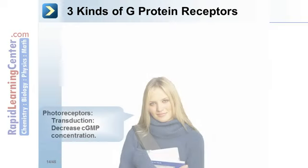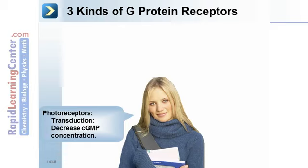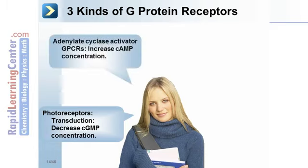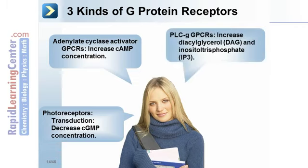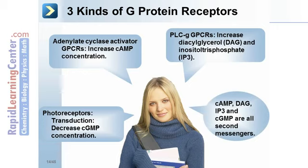There are three kinds of G-protein receptors. Photoreceptors use transduction to decrease cGMP concentration. Adenylate cyclase activator GPCRs increase cyclic AMP concentration. PLC-β GPCRs increase diacylglycerol (DAG) and inositol triphosphate (IP3). Cyclic AMP, DAG, IP3, and cyclic GMP are all second messengers.